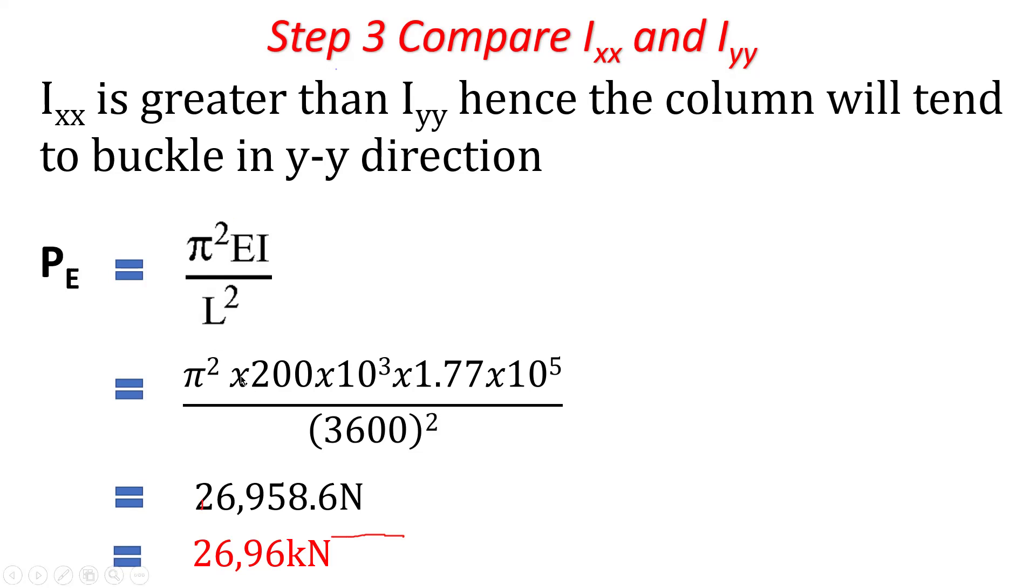So now we're just substituting the values. Now I've converted the E to newton per millimeter squared. Remember the E was given in 200 kilonewtons per millimeter squared, so I've multiplied by 10 to the power 3. The I is Iyy. Of course this is the length. It was in meters, now it is in millimeters, multiplied by a thousand. So if you're just punching the numbers, you get 26,958.6 newtons. And in kilonewtons, 26.96 kilonewtons. So that is your final answer and you get your 20 marks.